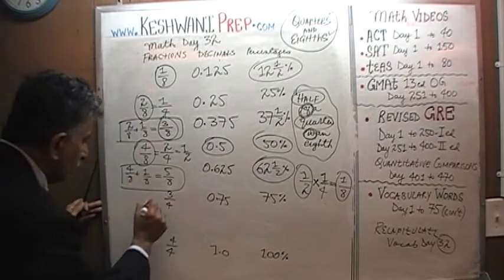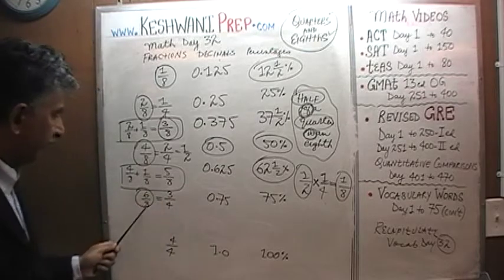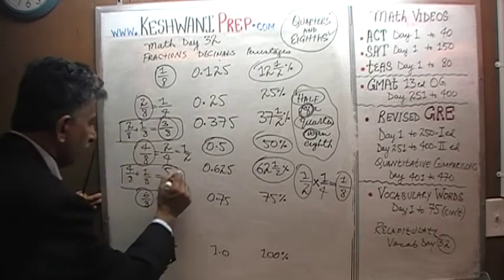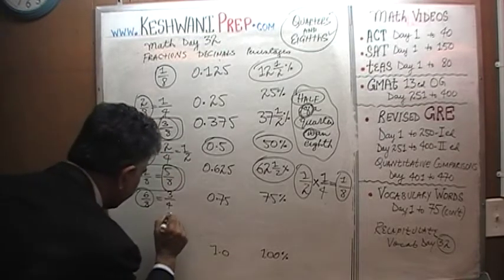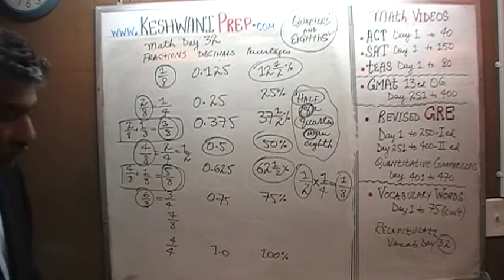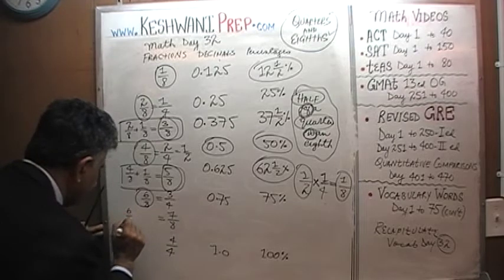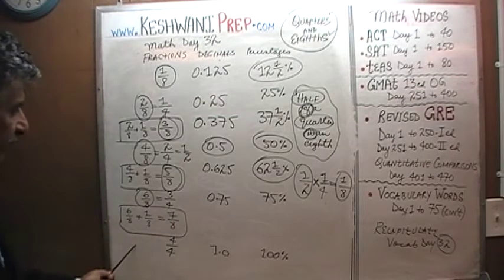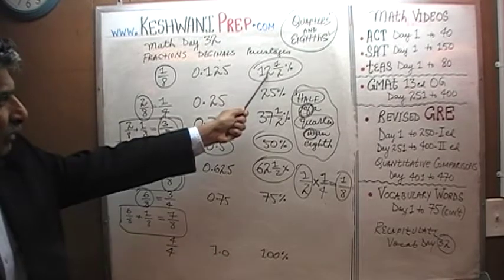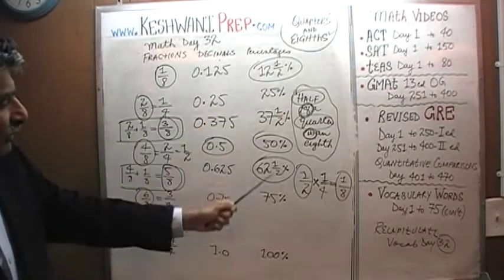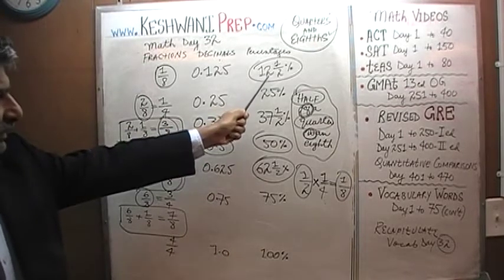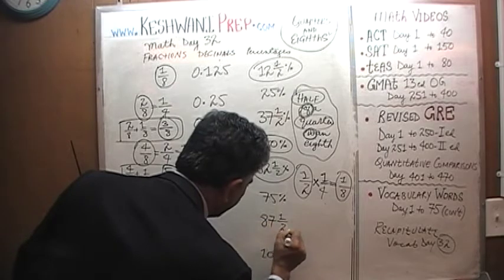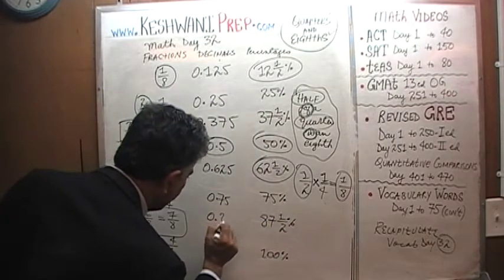Three quarters is the same as six eighths, because six eighths reduces to three quarters — that's 75%. So we have one eighth, two eighths, three eighths, four eighths, five eighths, six eighths. Seven eighths equals six eighths plus one eighth: 75% plus 12.5%. 75 plus 10 is 85, plus 2 is 87 — so seven eighths is 87 and a half percent, which is 0.875.